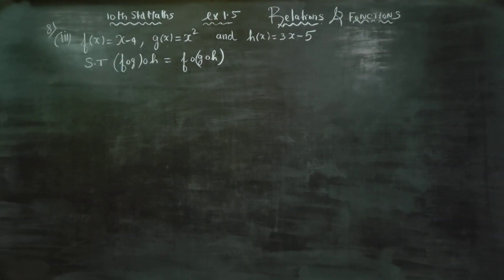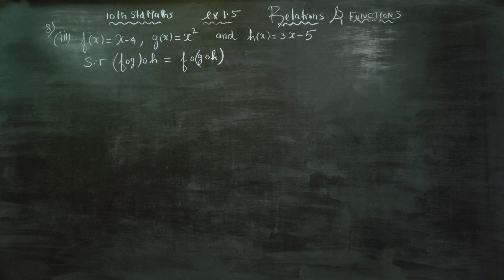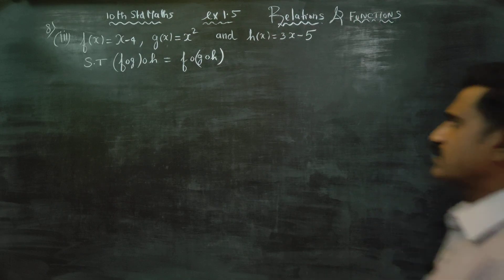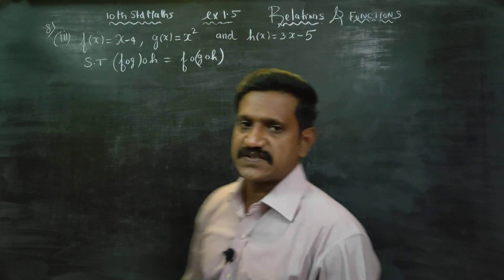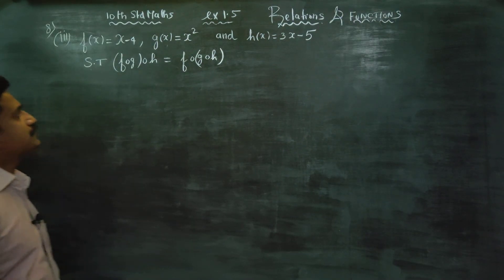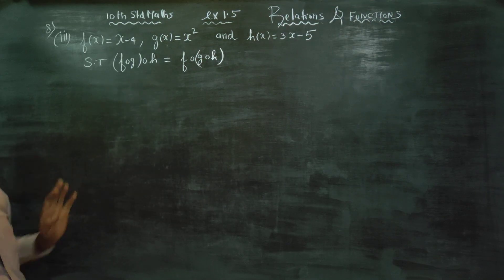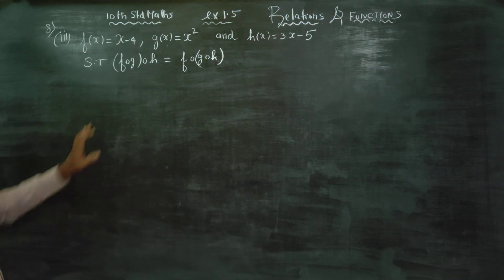Dear 10th standard students, in exercise number 1.5, sum number 8, third subdivision: f of x is equal to x minus 4, g of x is equal to x square, h of x is equal to 3x minus 5.